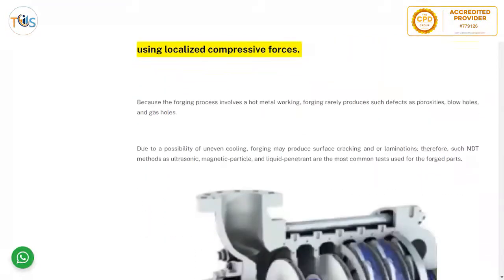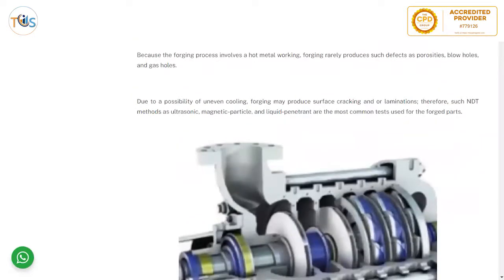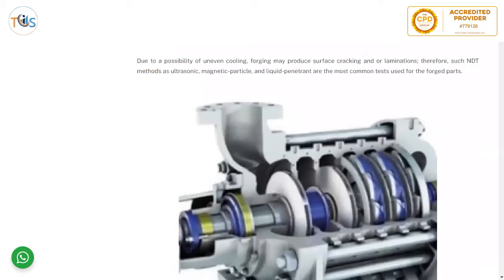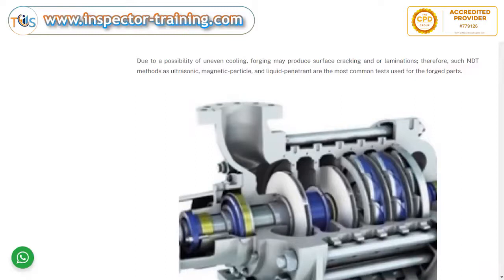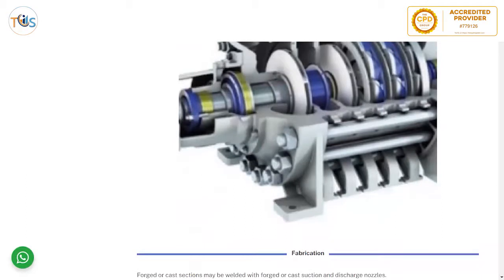Forging is a manufacturing process that involves shaping metal using localized compressive forces. Because the forging process involves hot metal forming, forging rarely produces defects such as porosities, blow holes, or gas holes. Due to the possibility of uneven cooling, forging may produce surface cracking and/or lamination. Therefore, NDT methods such as ultrasonic, magnetic particle, or liquid penetrant are the most common tests used for forged parts, which are used for impellers and rotors, whereas the casing is most often produced by casting.